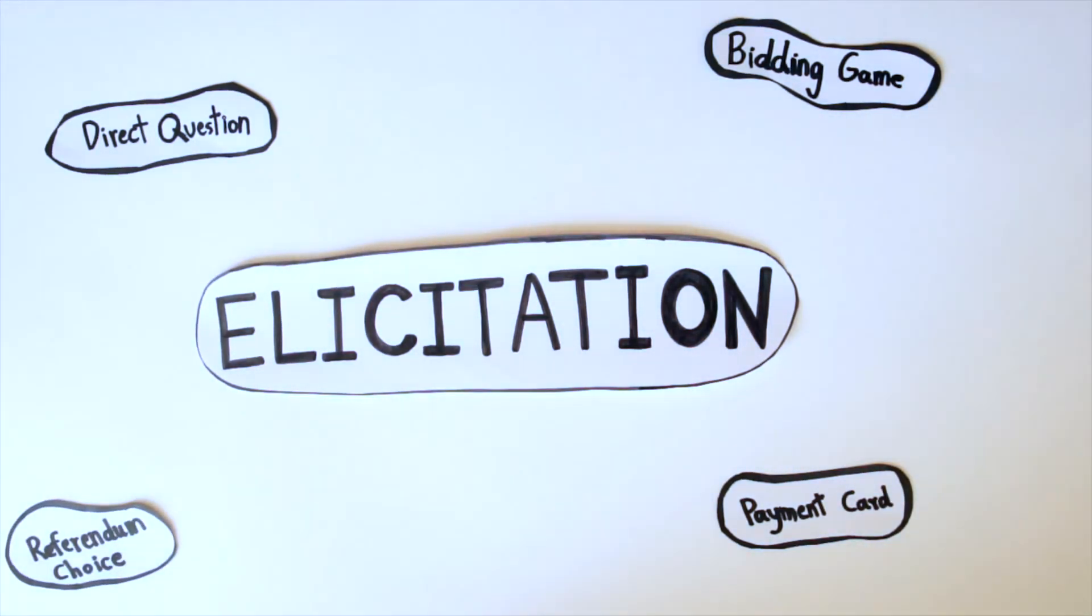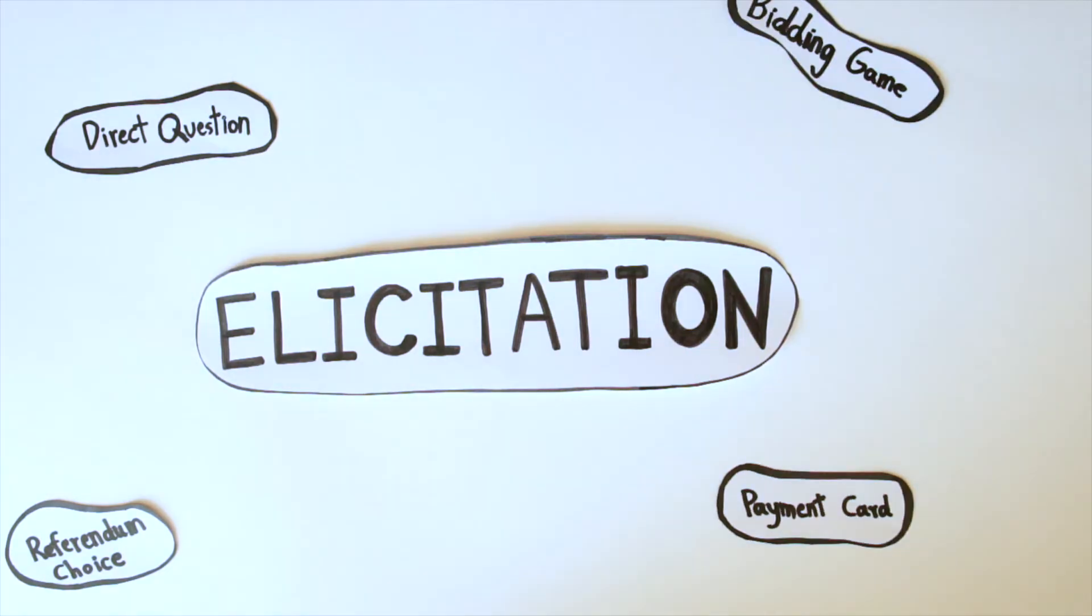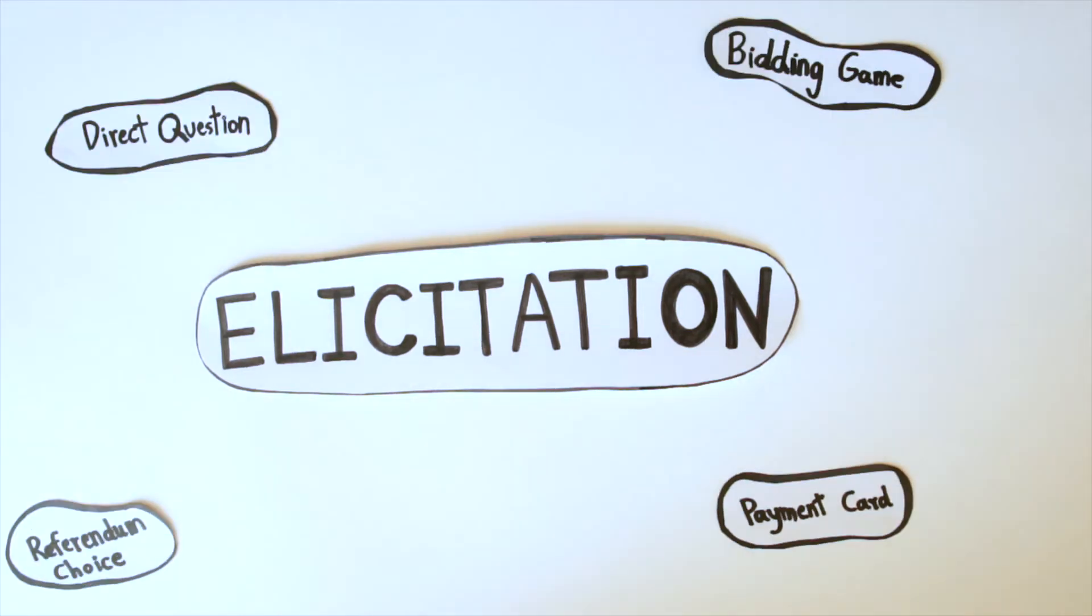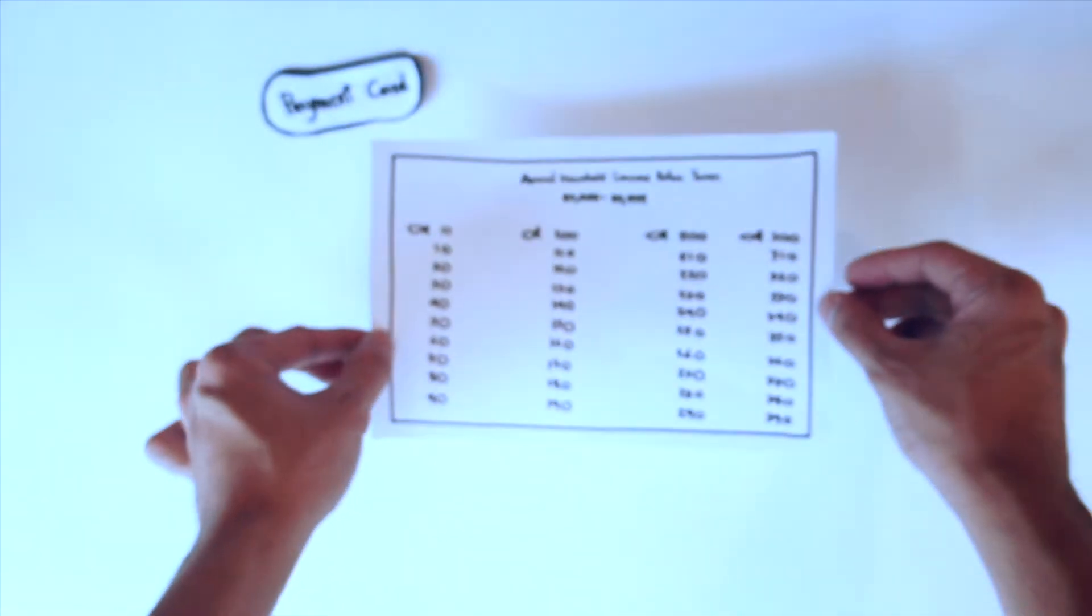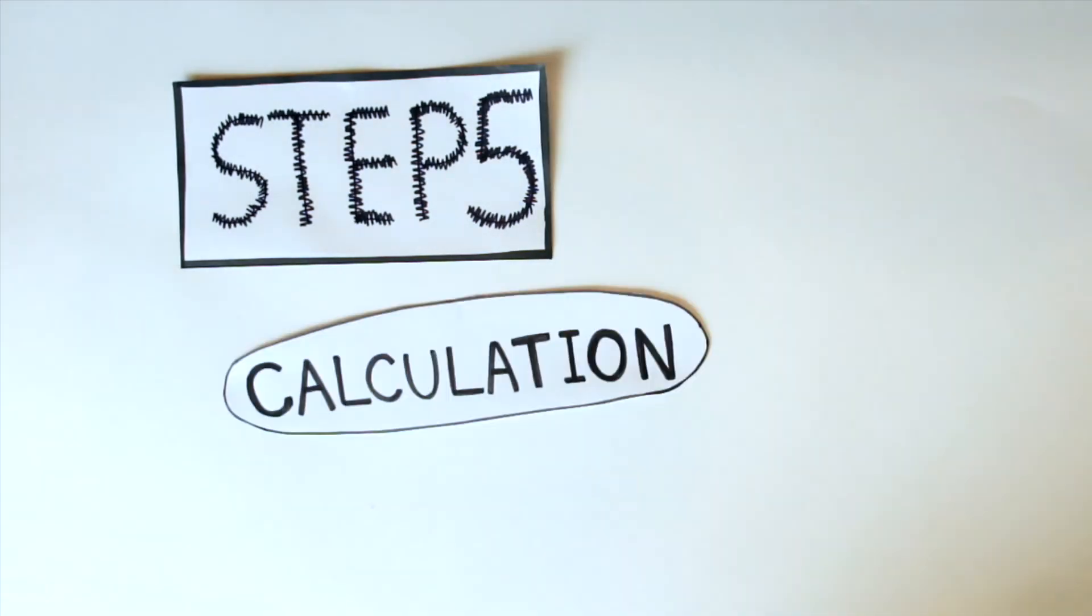Fourth, referendum choice. Also known as single-bounded dichotomous choice. Ask them if they are willing to pay 20 baht for example. In this example, we choose the payment card method. Step five, calculation.